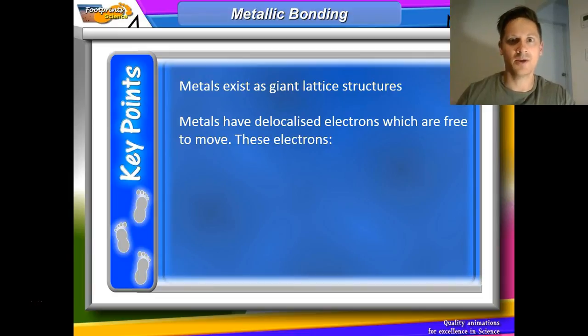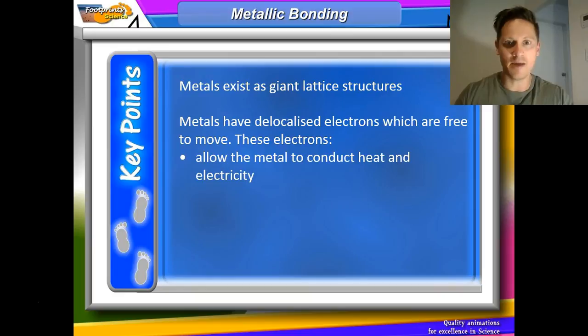Delocalized means those electrons don't exist or don't stay with any specific metal atom. They're free to move. Think of local as in your local area, so delocalized means the opposite. The fact that metals have delocalized electrons gives them a few specific properties. They allow the metal to conduct heat and electricity. Metals are great conductors of heat and electricity. A lot of metals are used in cooking, saucepans, fry pans, because they heat up quite quickly. They also cool down quickly.